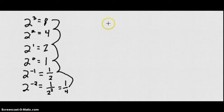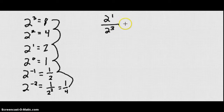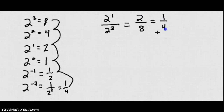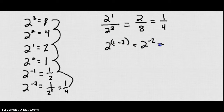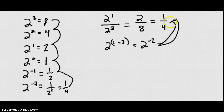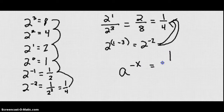Another way to see it: if I have 2 to the first over 2 to the third, that's 2 over 8, which is one fourth. Notice that 2 to the 1 minus 3 gives me 2 to the negative second, which is also one fourth. So this shows two reasons why a number to a negative exponent equals 1 over that number to that positive power.